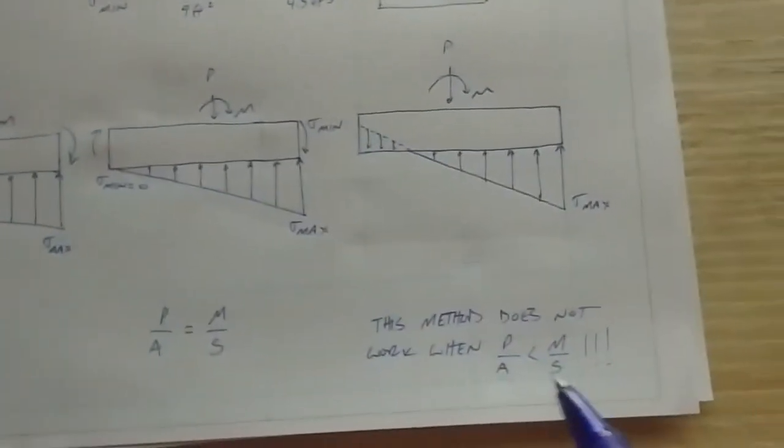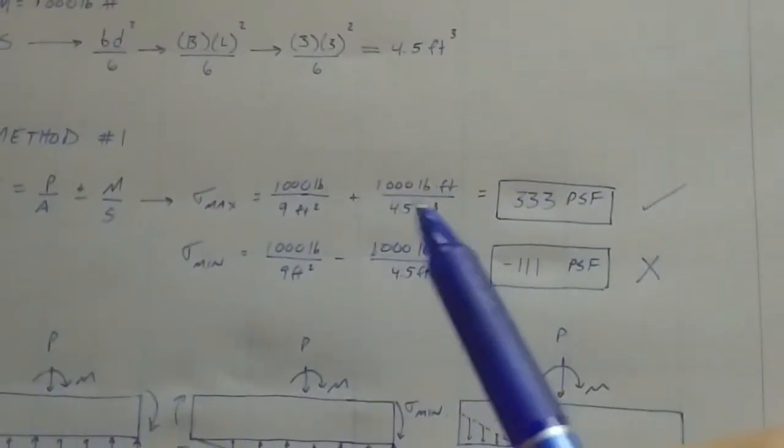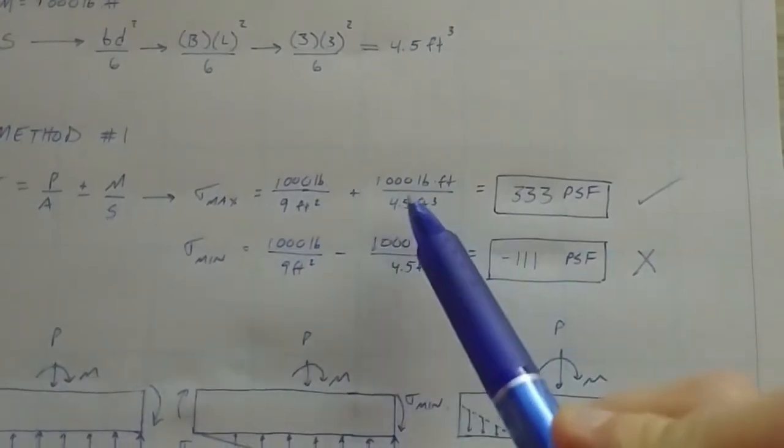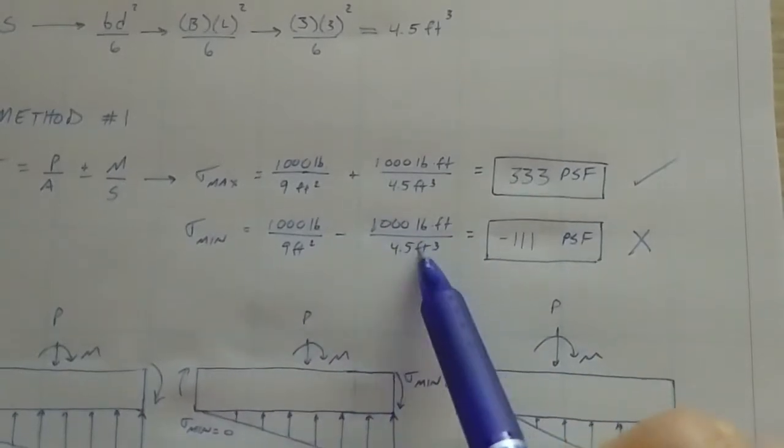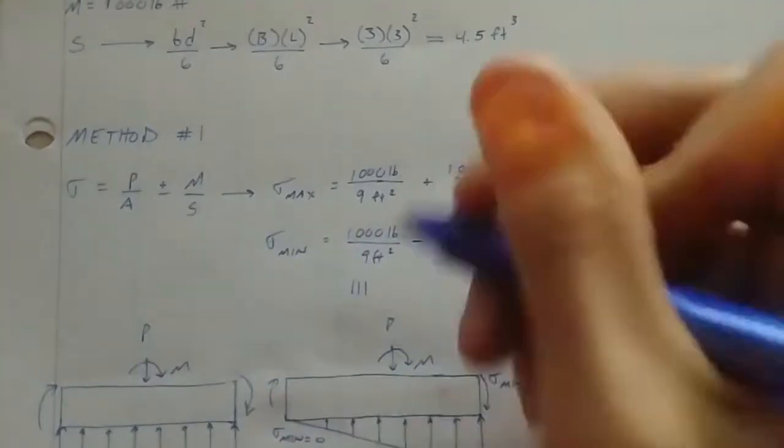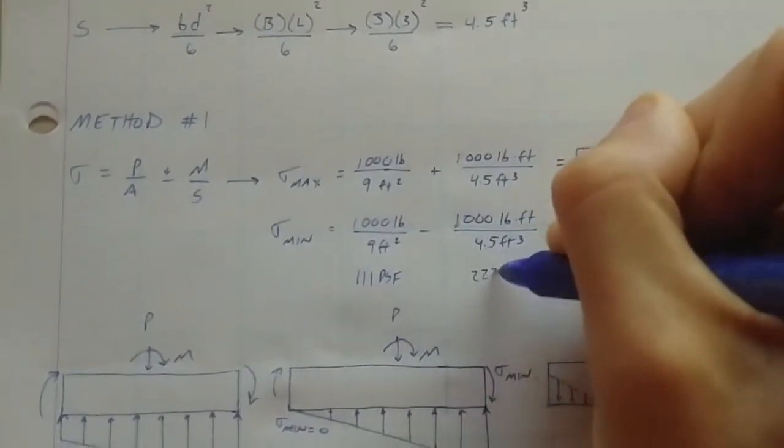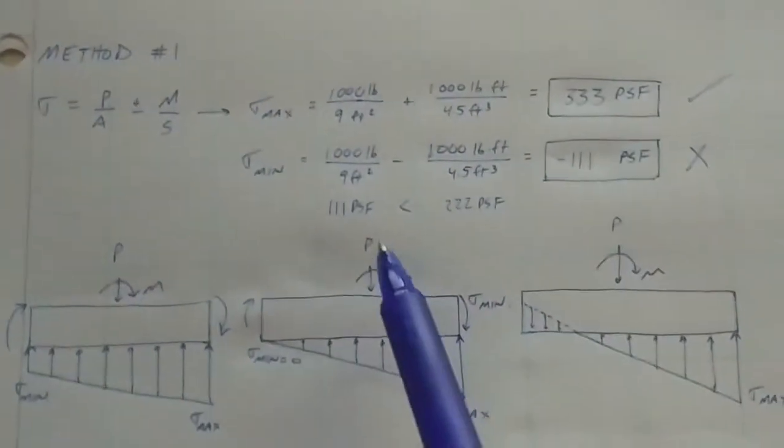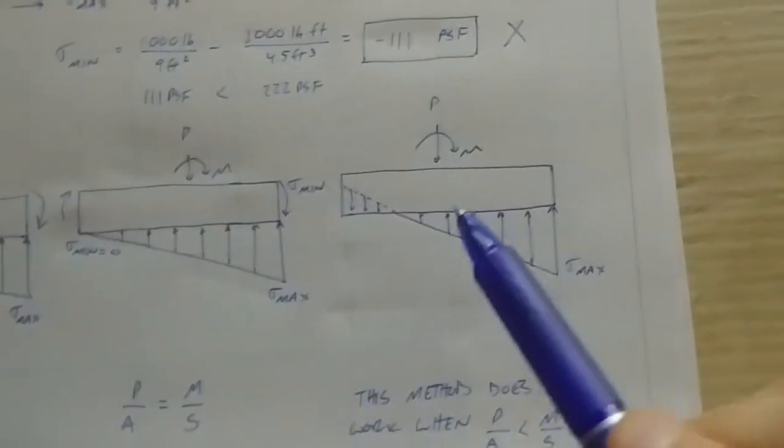When P over A equals M over S, it's the same thing. That footing is trying to turn over, but you're just balanced. So you still have your max stress, and then all the way at the end of the footing, perfectly at the end, you have your minimum stress just equal to zero PSF, right at the tip of it, it just goes to zero. So the equations in method one still work out as well. It's when we cross into this P over A is less than M over S, which we have over here. This is 111 PSF and this is 222 PSF. So M over S is greater than your P over A, which gets you into this scenario.